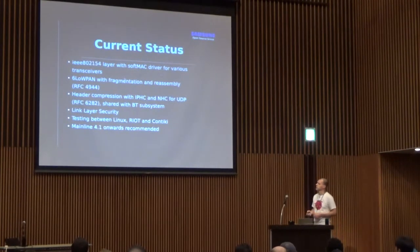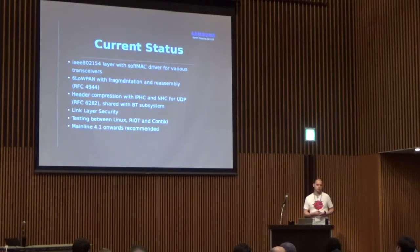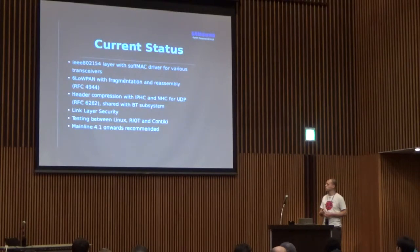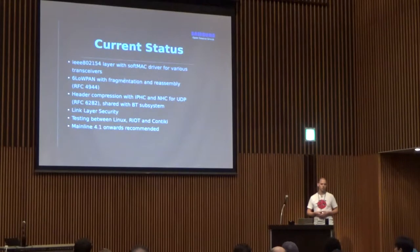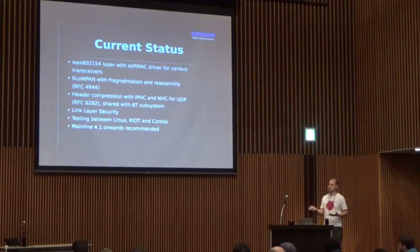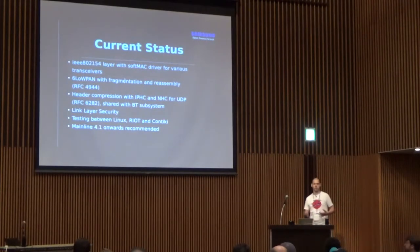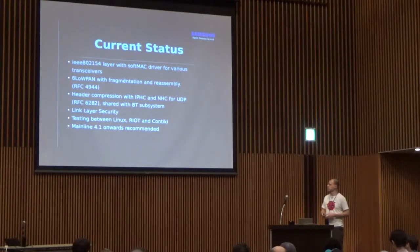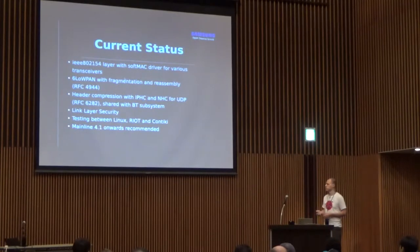What's the current status? We have a 802.15.4 layer inside the kernel with SoftMAC drivers for various transceivers. We have support for 6LoWPAN fragmentation and reassembly needed for the small MTU, header compression for the IPv6 header, and various next-header compression schemes including UDP. That compression is shared with the Bluetooth subsystem, since there's also an RFC for running 6LoWPAN over Bluetooth. We have limited link-layer security support, and regular interoperability testing between Linux and other operating systems. The code has been in mainline for a while; I'd recommend kernel 4.1 onwards.